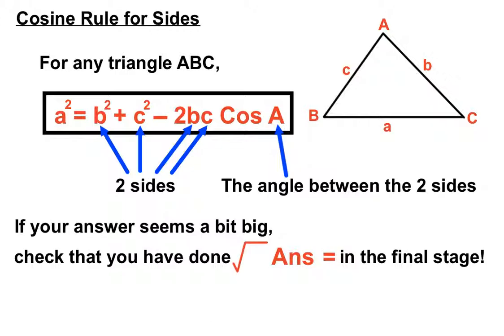We want a in the end, or p as in the example. a squared is in the formula. We'll need to square root at some stage just before the end.